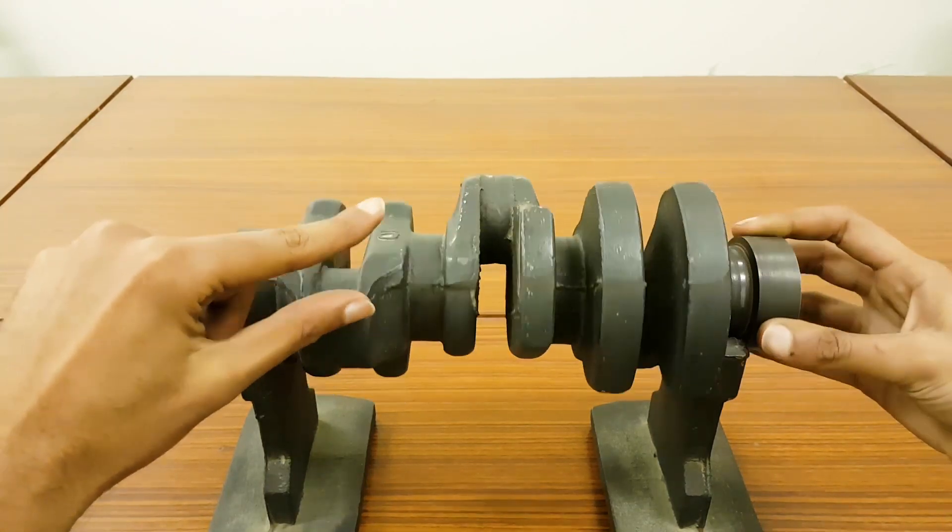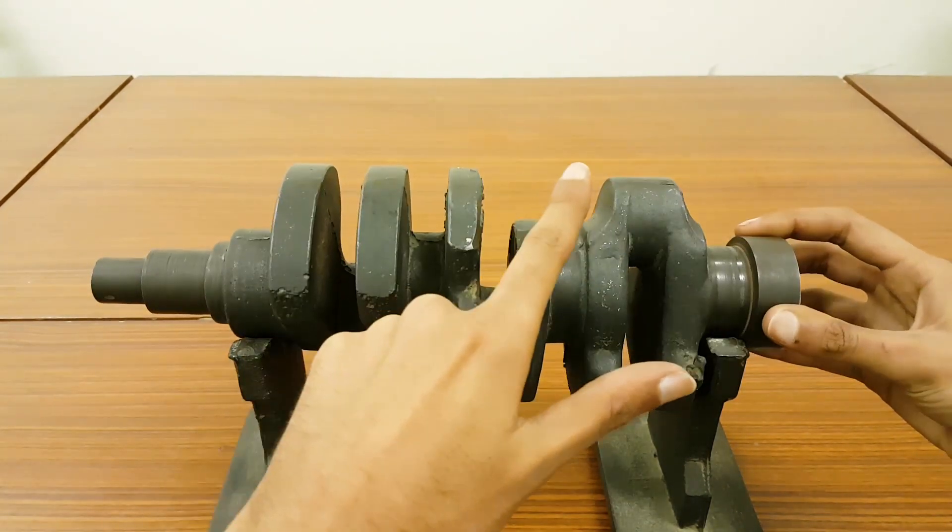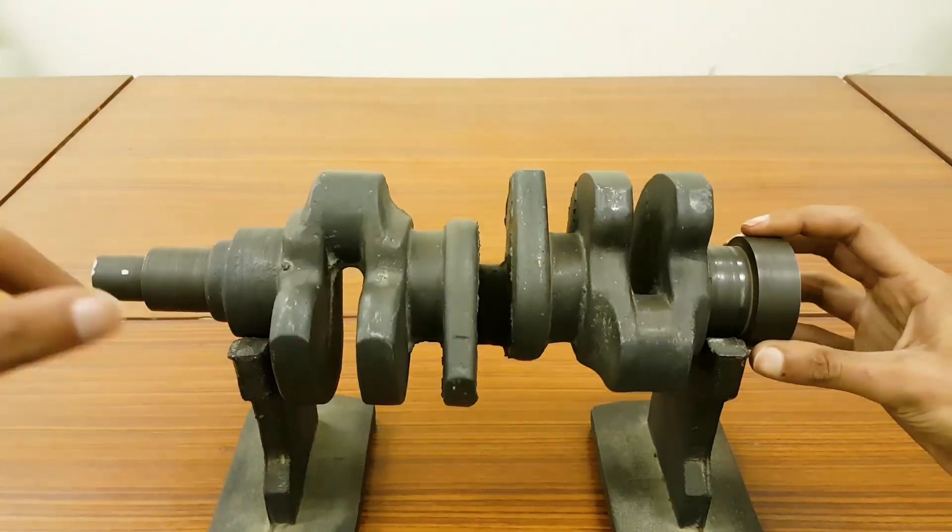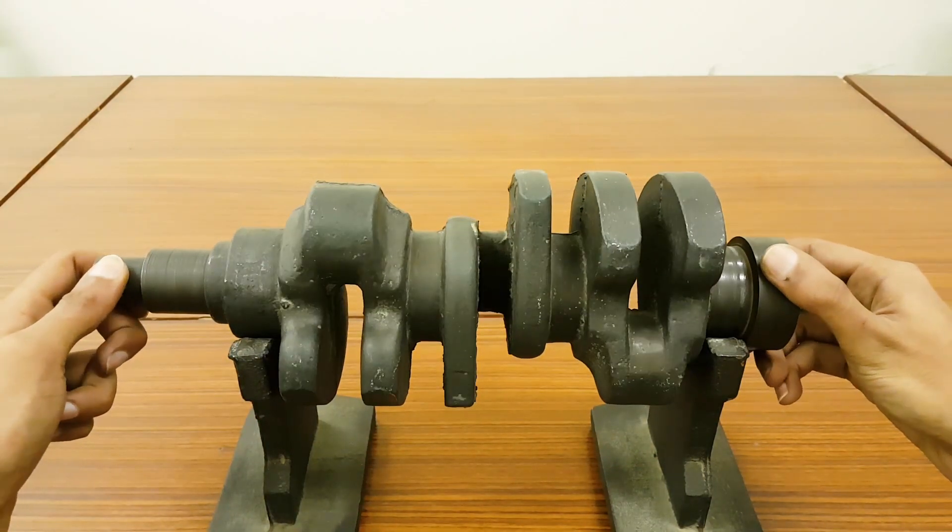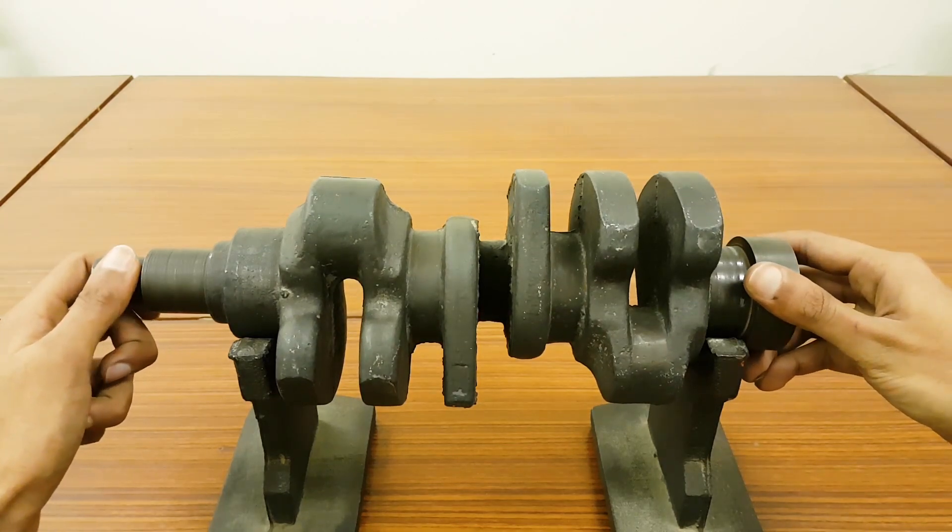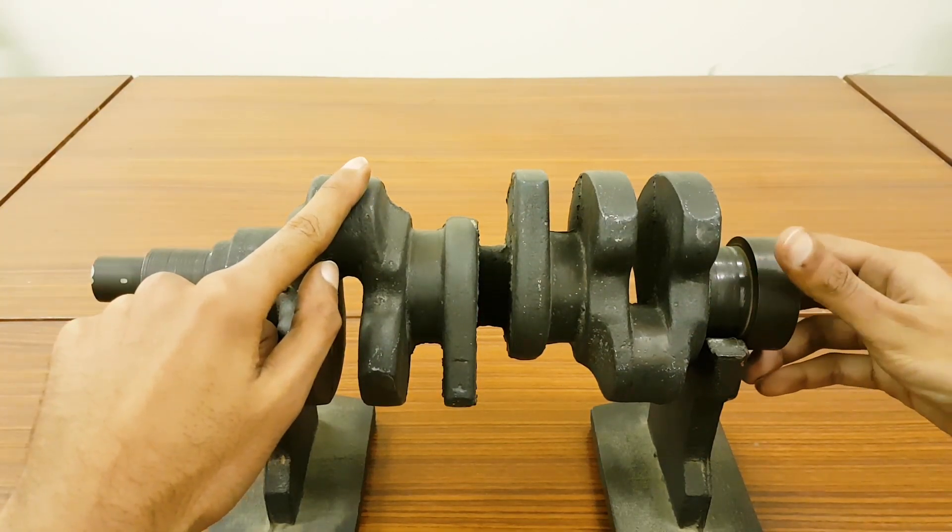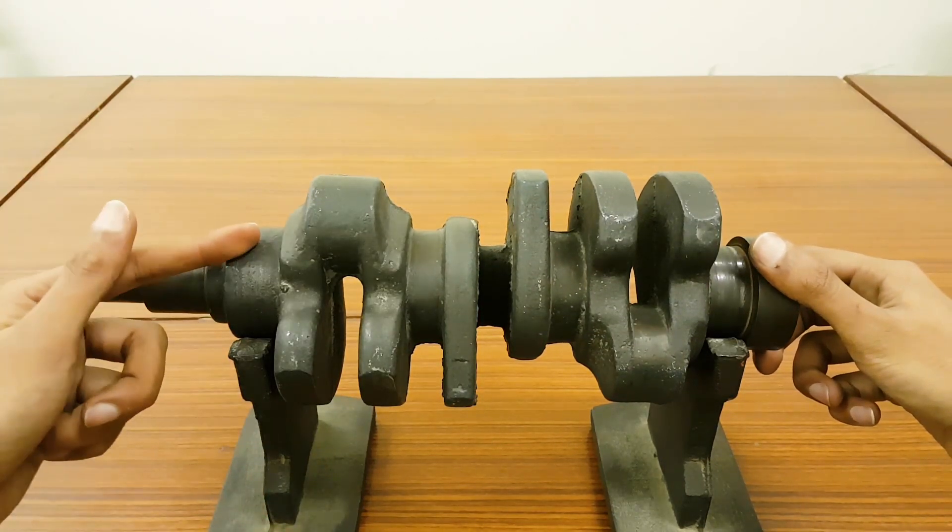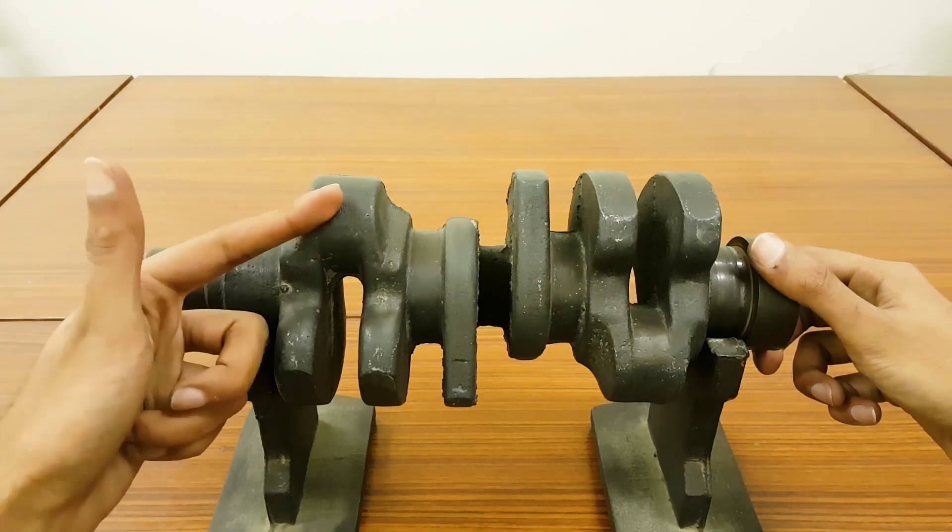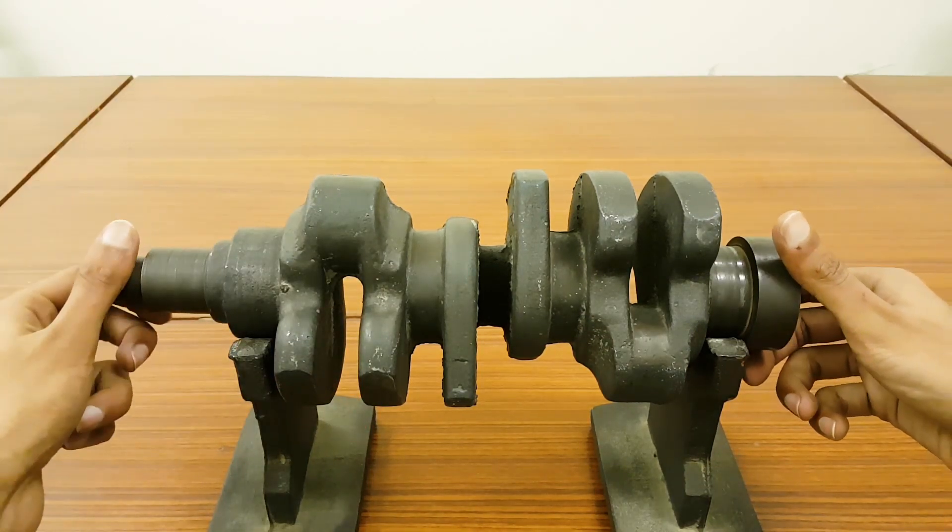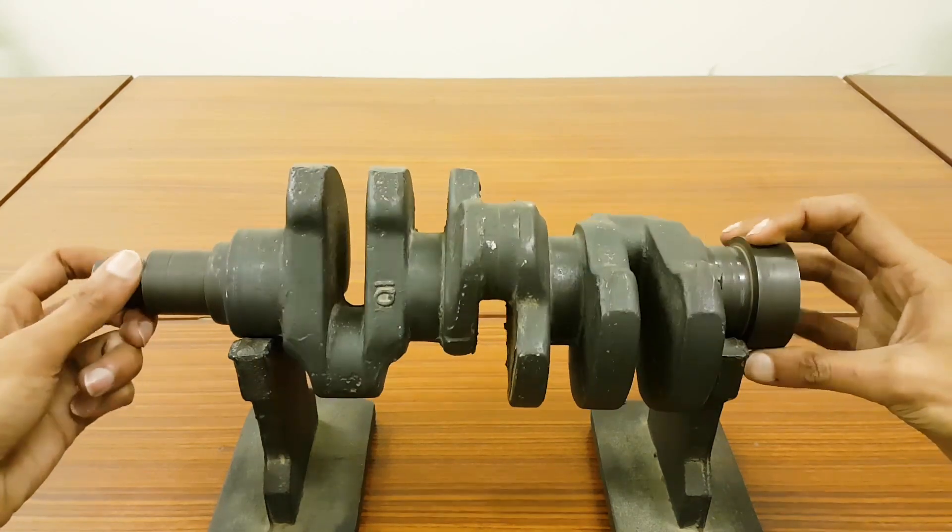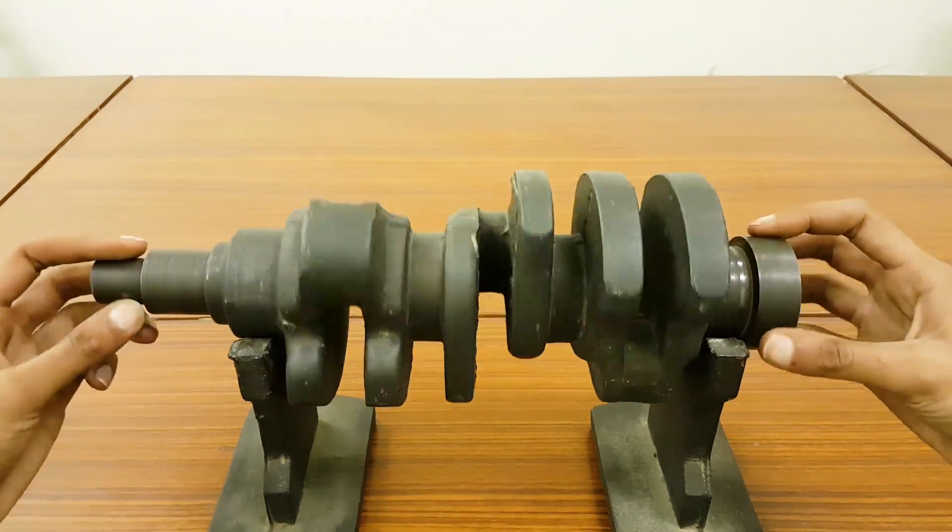If you compare the motion of these crank pin journals, these are basically off-center. These are not exactly in the center, they are off to provide the stroke length to a piston. You can see all three crank pins are off-center.